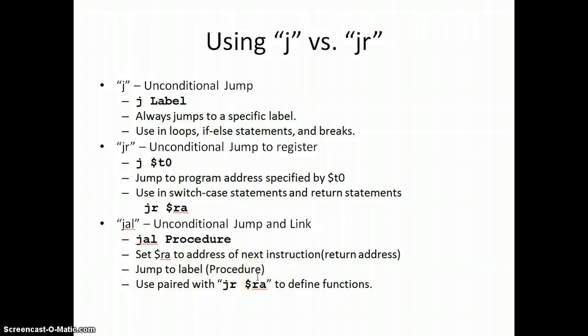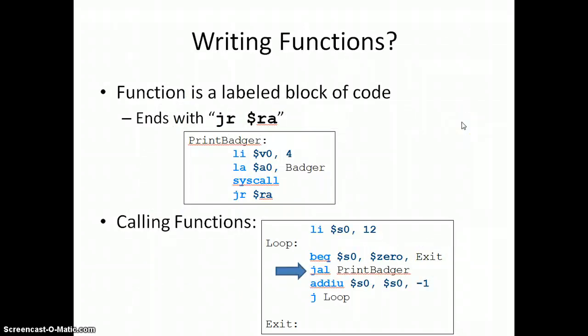Moving smoothly into writing functions, remember a function is just a labeled block of code. It's like a procedure except that it ends with a jump to register RA statement. Basically what we've said is I'm going to label this block of code. In this case, it's print badger. I do a little print syscall inside of here, or it could be anything and we could name it whatever we want. And then I do a JR RA at the end. What the JR RA does is it looks at whatever the value in the return address is and it jumps back there.